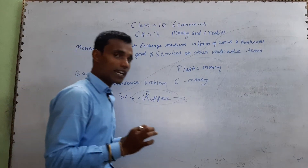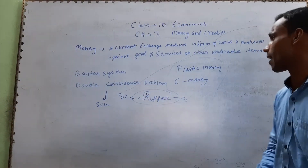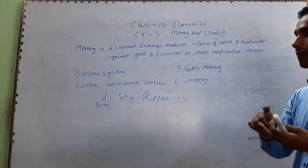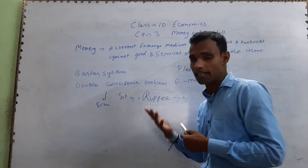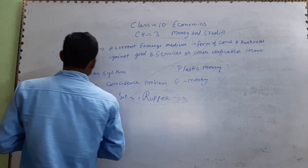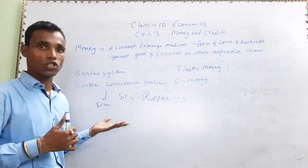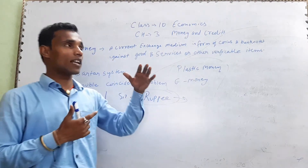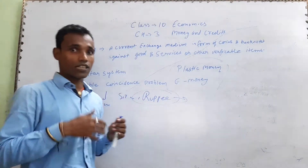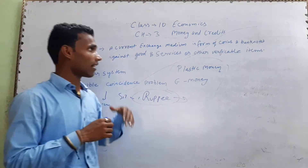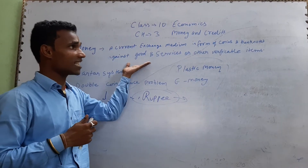Money is very important. There are different types of money: plastic money, coin money, banknotes, e-money, and electronic money. The current exchange medium is coins and banknotes, used against goods or services. We exchange them using money.